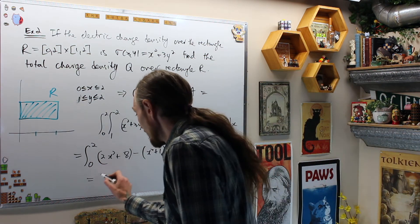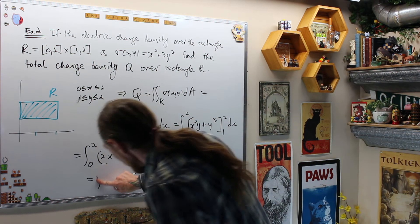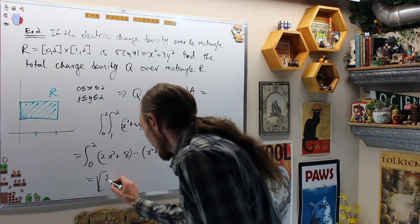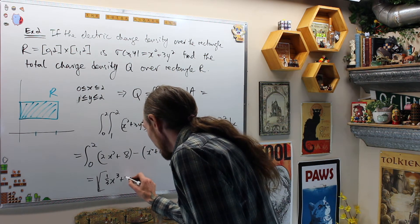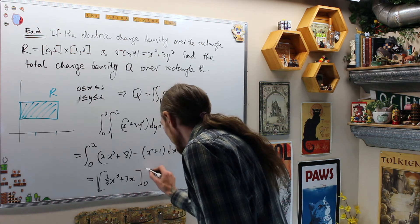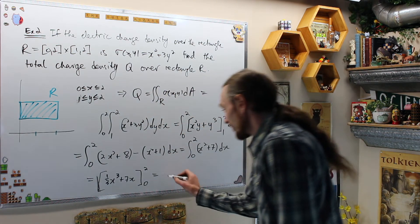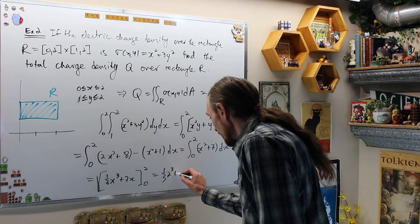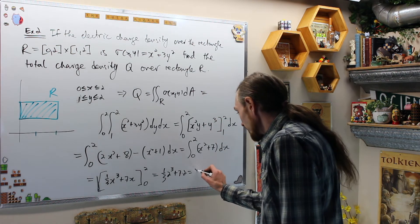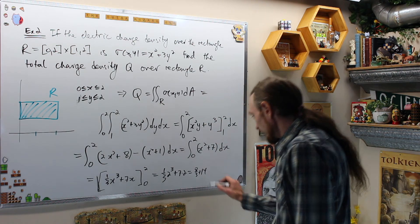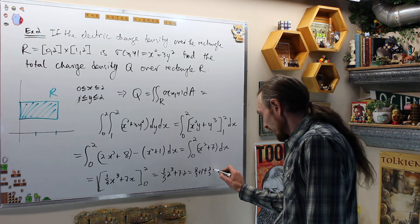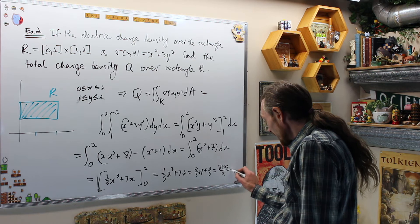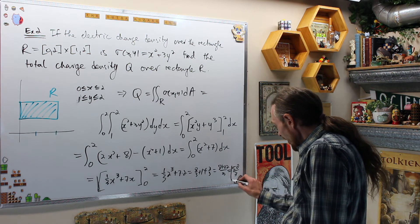By the fundamental theorem of calculus this is [(1/3)x³ + 7x] evaluated from 0 to 2, which equals (1/3)·8 + 7·2 = 8/3 + 14 = 8/3 + 42/3 = 50/3.